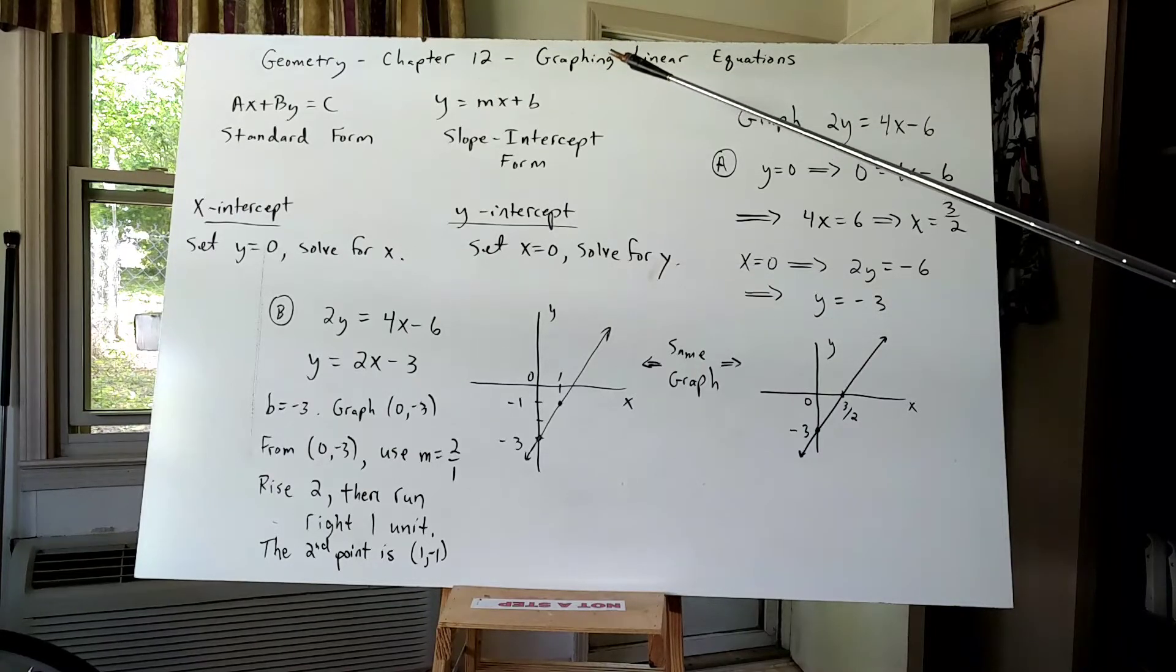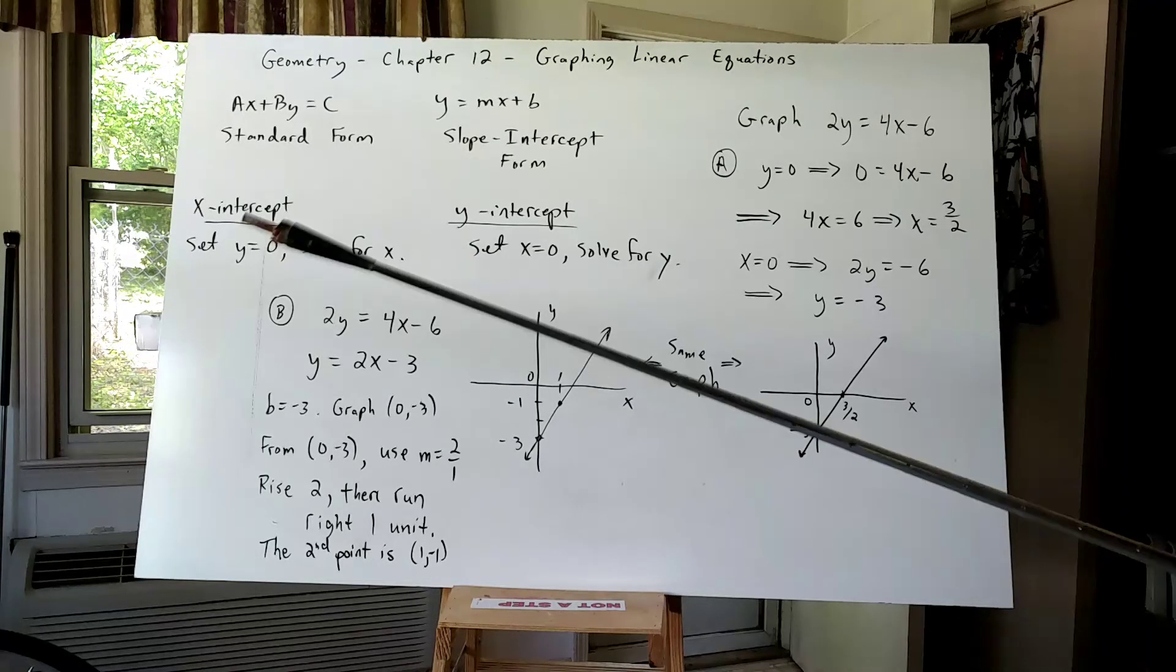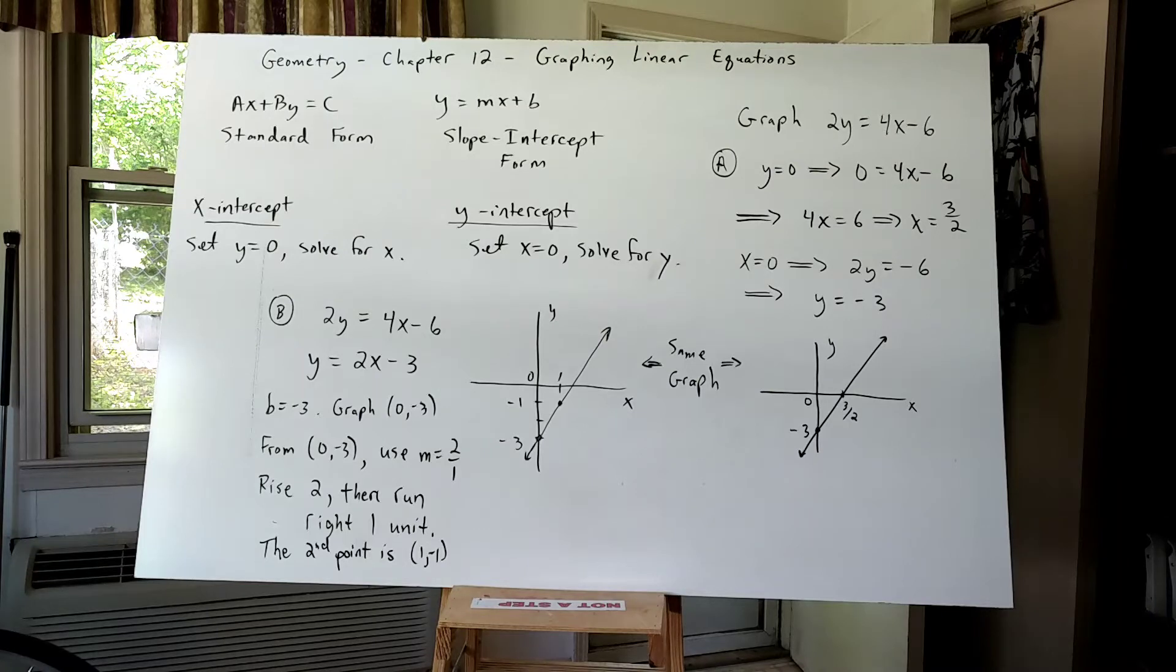We're going to go to Chapter 12 and graph linear equations. The assignment is on Gradebook Wizard and will be from the textbook, so there won't be an internet site to go to. You'll actually go back to your textbook, write up your work on notebook paper, take an image of it, a photo, and send that directly to my Cambridge email.